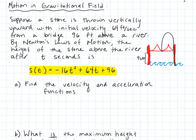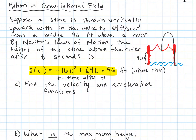S of T is in feet above the river, and T is time after throw. Newton's laws of motion on Earth depend on gravity. You can see that the initial velocity is right here; this negative 16 has to do with gravity, and we can get into that more when we talk about antiderivatives. Notice that the constant in this quadratic is actually that height above the water that we're starting at.